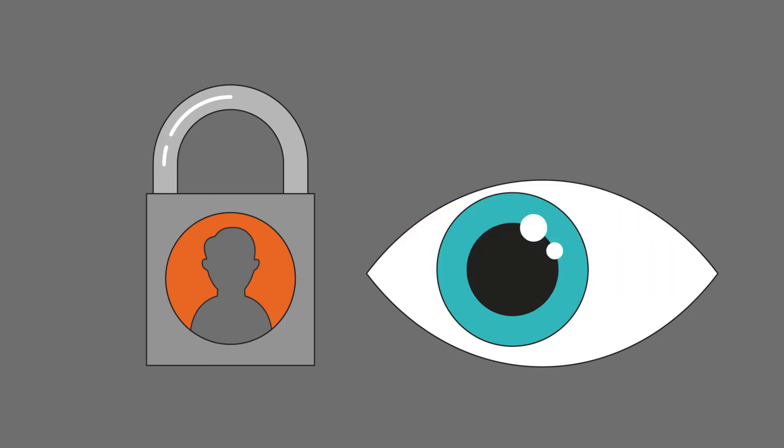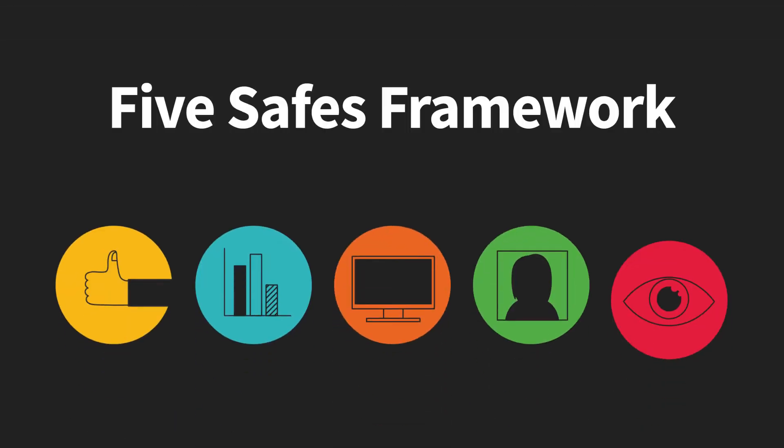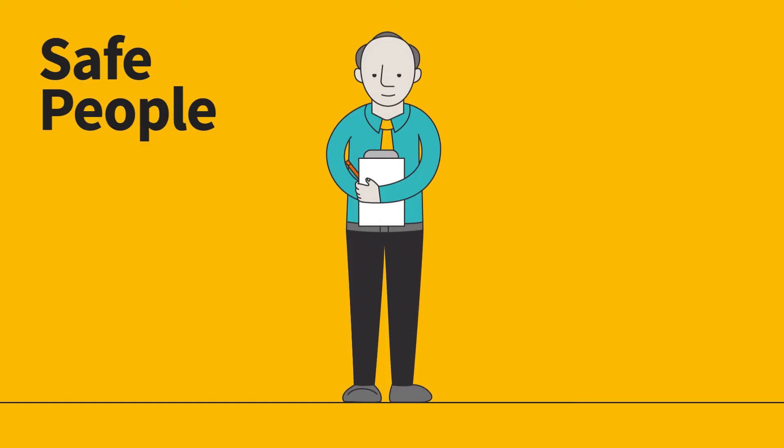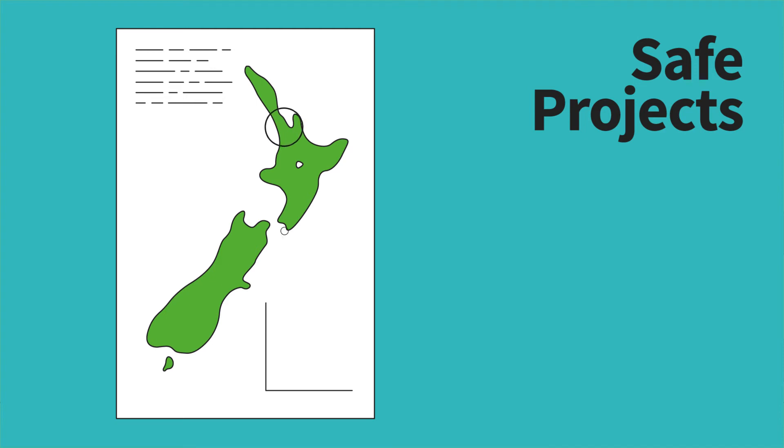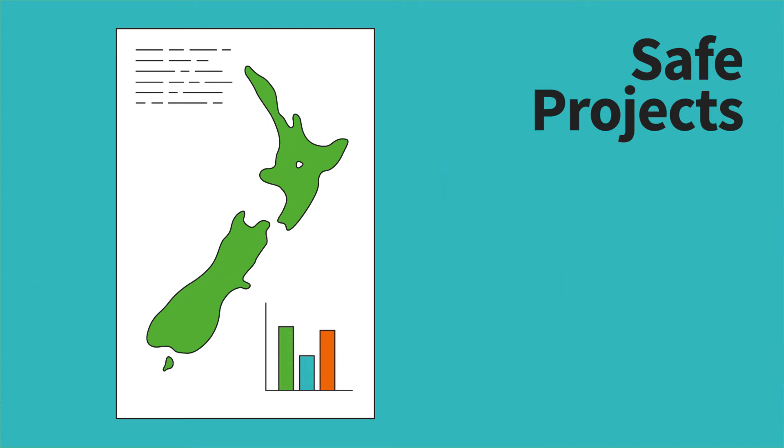If someone else wants to see or use sensitive information, we apply our 5 safes framework. We only give access to researchers who can be trusted. Research is always about analysis of groups, not individuals, and aims to solve issues that benefit New Zealand.